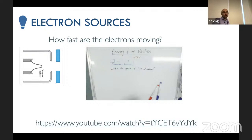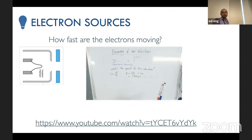Even at 5 kV electrons move fast. Some FEGs are thermionically assisted with an extraction voltage of a few thousand volts. At roughly 200 kV, electrons travel at about half the speed of light; at 300 kV, approaching two-thirds the speed of light. That is a fast-moving electron.